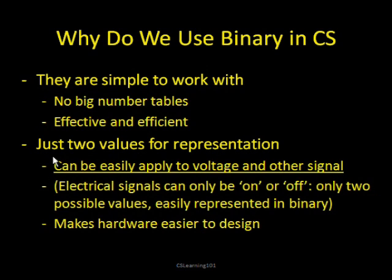The more important reason is that you only need two values to represent different things. This applies directly to the voltage or electricity signals inside the computer. Electrical signals can generally only be on or off — those two possible values are easily represented in binary. Generally, 0 is off and 1 is on.